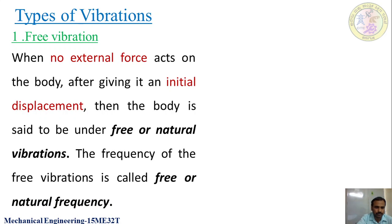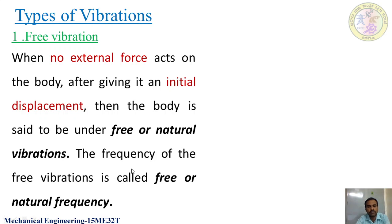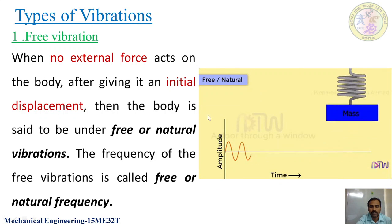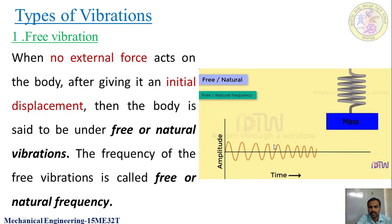First is free vibration. When there is no external force acting on the body after giving it an initial displacement, then the body is said to be under free or natural vibrations. If a body vibrates continuously after giving an initial displacement, without any external force, then it is said to be in free vibration. The frequency of free vibrations is called natural frequency or free frequency. Here you can see a mass-spring system vibrating with an initial displacement — that is an example of free vibrations.